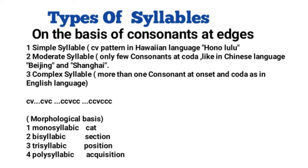When looking at the morphology of syllables, a syllable can be of four types. The first is monosyllabic, meaning one syllable — for example, 'cat.' The second is bisyllabic, meaning two syllables — example: 'section.' The third is trisyllabic, meaning three syllables — example: 'position.' And last but not least, polysyllabic means four or more syllables — example: 'acquisition.'